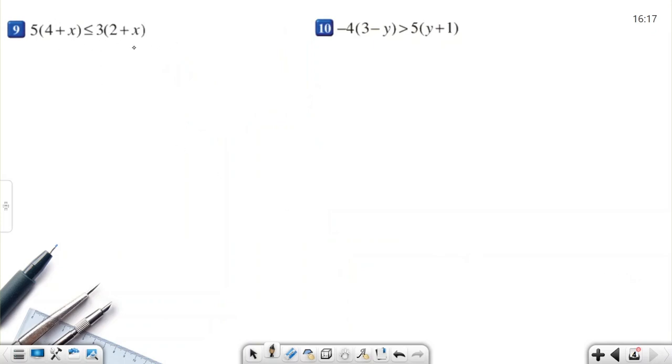Now again, there are some parentheses. Distributive property. 5 times 4 is 20. 5 times x plus 5x. Less than or equal. 3 times 2 is 6. 3 times x plus 3x. Both sides have x. So I'm going to subtract. Take away this 3x from both sides of the inequality.